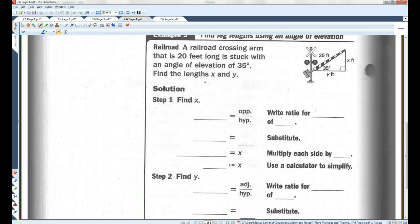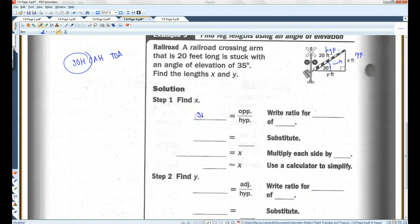You guys can do the checkpoint. Example 5. A railroad crossing arm that is 20 feet long is stuck with an angle of elevation of 35 degrees. Find the lengths of x and y. So here's our situation. Let's solve for x first. x is the opposite side. 20, the only length we're given, is the hypotenuse. So SOHCAHTOA, we have opposite and hypotenuse, we're going to use sine. So sine of 35 degrees is opposite over hypotenuse. Sine of 35 degrees, the opposite side is x, the hypotenuse is 20. I'm going to multiply each side by 20. So now I have 20 times sine of 35 degrees.